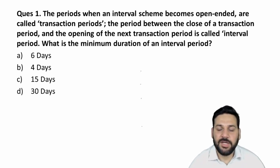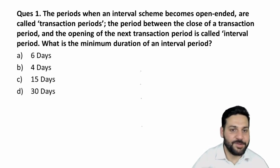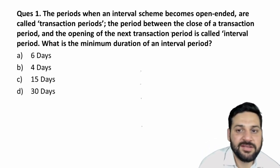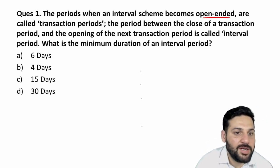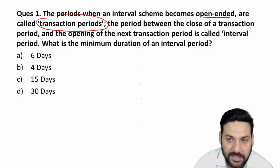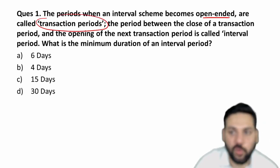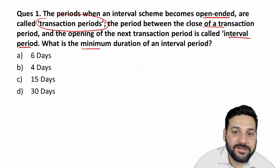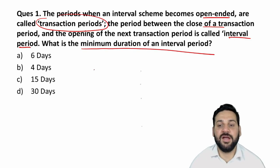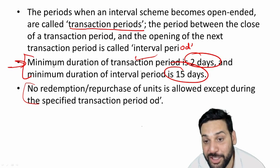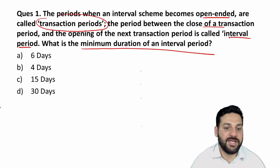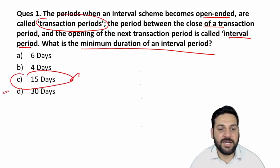To summarize: the period where an interval scheme becomes open-ended is called the transaction period. The period between the close of one transaction period and the opening of the next is the interval period. The minimum duration of the interval period is 15 days, and 2 days for the transaction period.